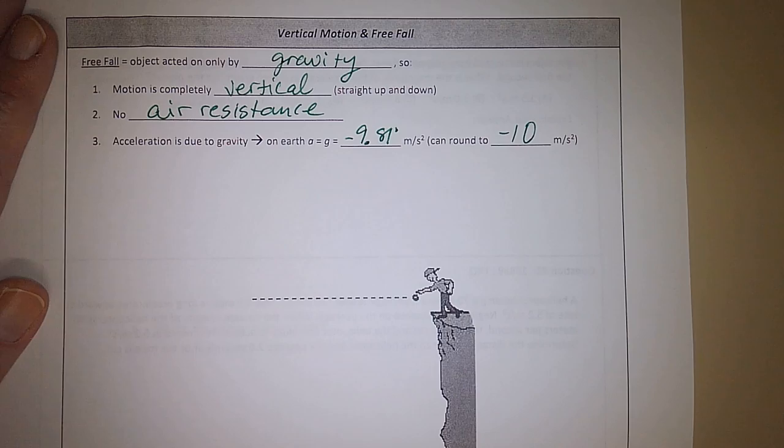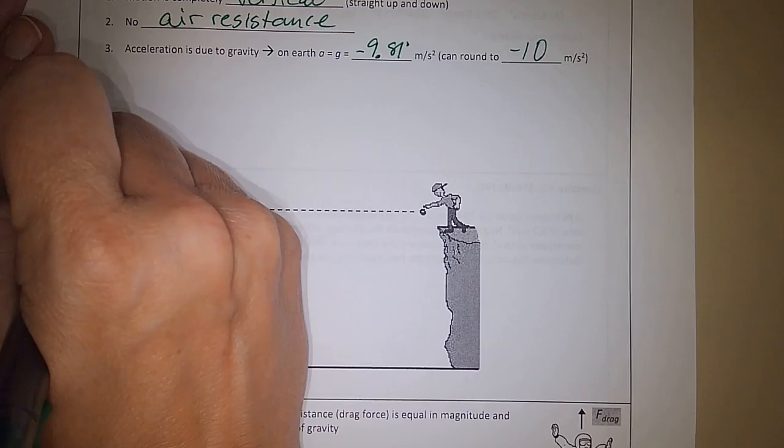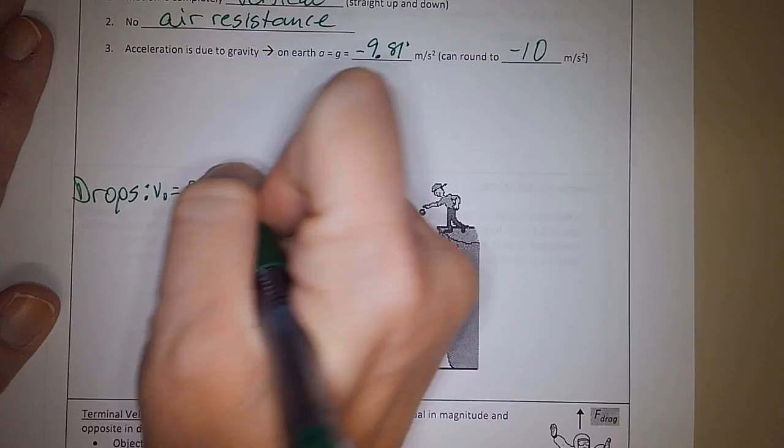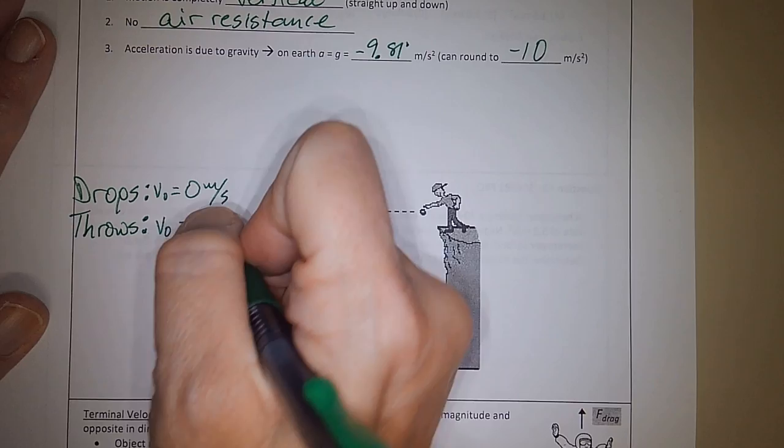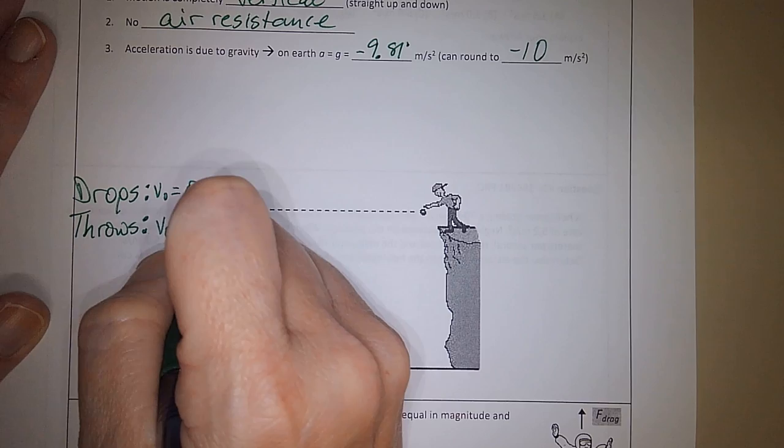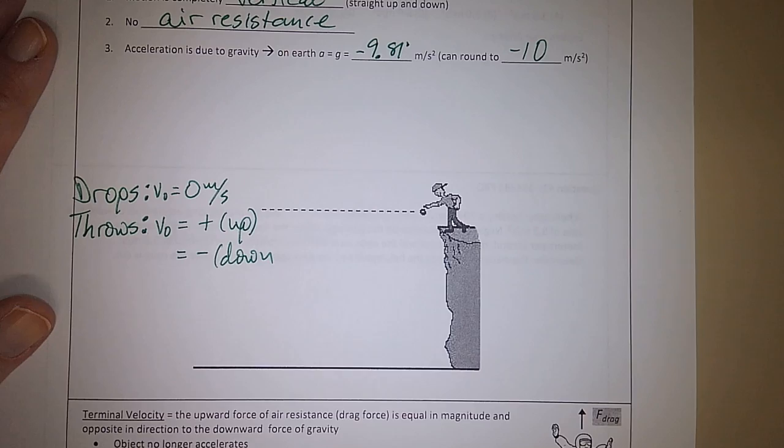Okay, so here's a little guy, he's got a ball, right? If he drops the ball, then the ball's initial velocity is 0. If he throws the ball, depending on which way he throws it, it can be positive if he throws it up, or it can be negative if he throws it down.